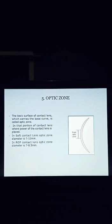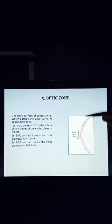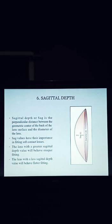Number 5: Optic zone. Optic zone means the back surface of the contact lens which carries the base curve. It is that portion of the contact lens where the power of the contact lens is placed — previously I said the power of the contact lens is located at the center of the contact lens; this is called the optic zone. In soft contact lens, optic zone diameter is 7 to 12 millimeters, and RGP contact lens optic zone diameter is 7 to 8.5 millimeters.